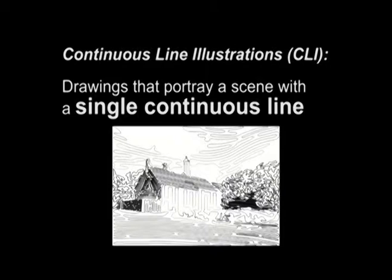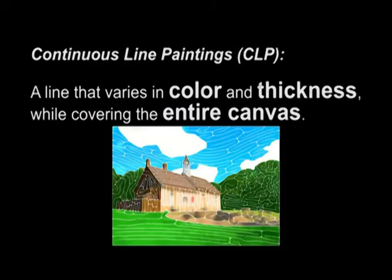In our approach, users segment the image into regions and assign a region type to each of them. Orientation fields are then created for each region based on their types, and then a grid of the image is generated according to these fields. The illustration is modeled as a path of grid cells that covers most areas of the grid. We also show how to transform continuous line illustrations into continuous line paintings, an artistic style consisting of a single line that varies in color and thickness while covering the entire canvas.